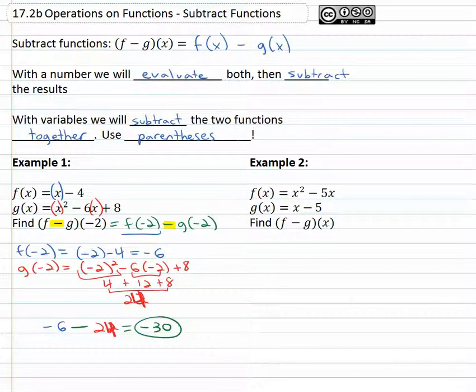Let's try one with a variable. Here we're told to find (f − g)(x), which simply means take f(x) and subtract g(x) from it. What is f(x)? f(x) is x² − 5x, and we're going to subtract whatever g(x) is. What's g(x)? x − 5.